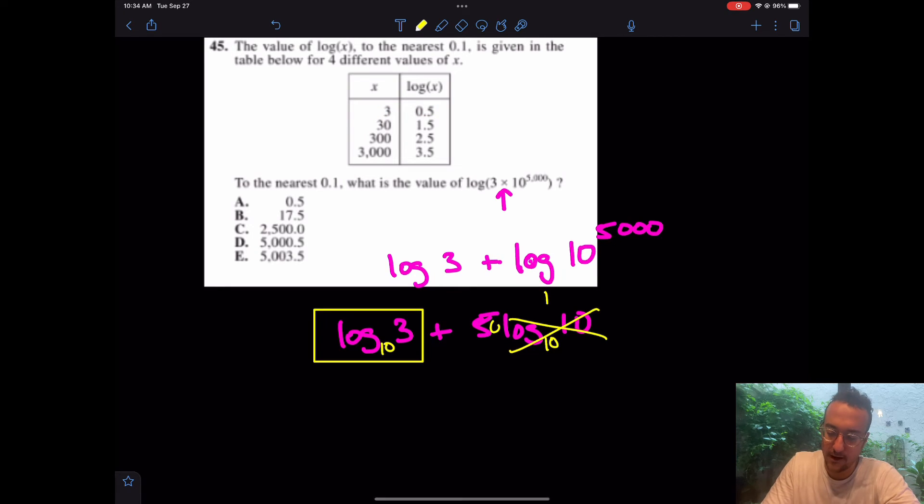So at the end of the day, what is the final answer? It's 5. That was a 5,000. So I have 5,000. Remember, this dropped to the front. So 5,000 plus what was log base 10 of 3? 0.5. The final answer is 5,000.5. So the answer choice is D.